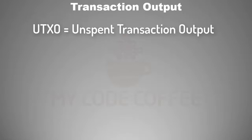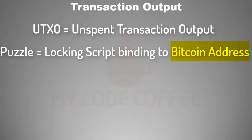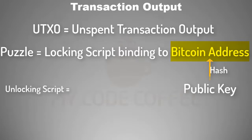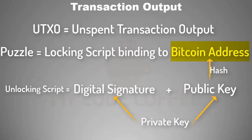For most of the time, this puzzle is a locking script which locks the output to a Bitcoin address. As you know, a Bitcoin address is nothing but a hash of a public key. This puzzle can be solved by an unlocking script which has the public key along with the digital signature of the private key that created this public key.